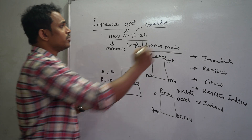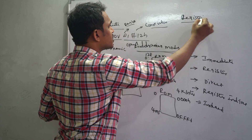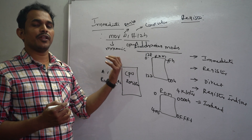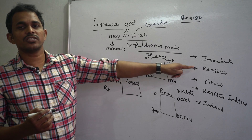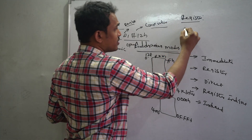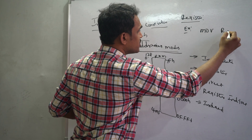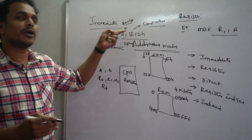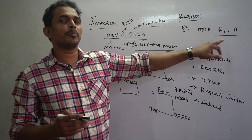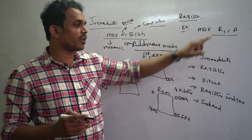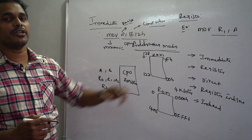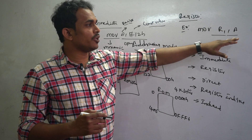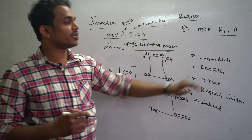Register addressing mode is used to share data between registers. When both source and destination operands are registers, it comes under register addressing mode. Both registers must be of equal size — for example, A is an 8-bit register and R1 is also an 8-bit register, so you can share data between them.